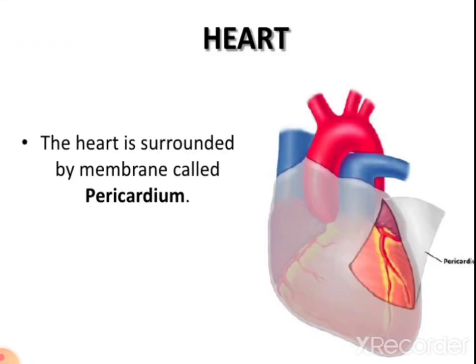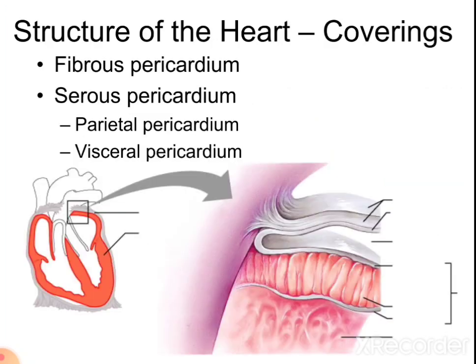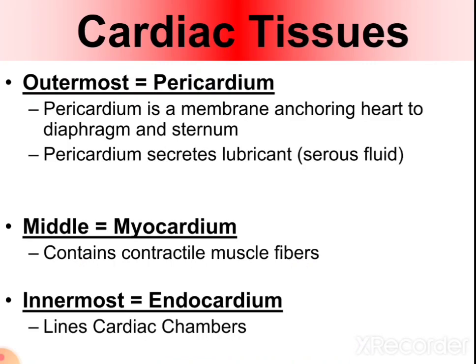The heart is surrounded by a membrane known as the pericardium. Its function is to restrict excessive movement of the heart and serve as a lubricated container in which the different parts can contract. The pericardium has two layers: the outer fibrous and the inner serous. The inner serous pericardium divides into two layers: parietal and visceral pericardium. The outermost pericardium anchors the heart to the diaphragm and sternum, and secretes lubricant.